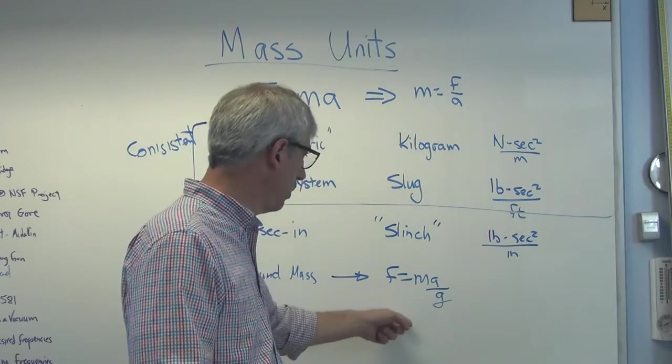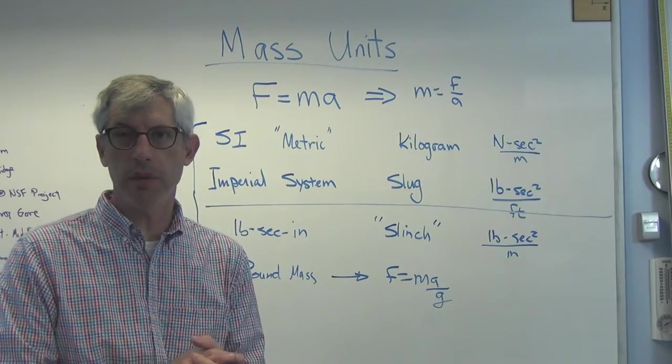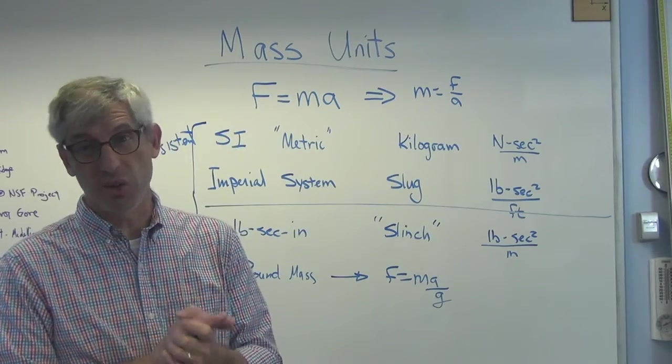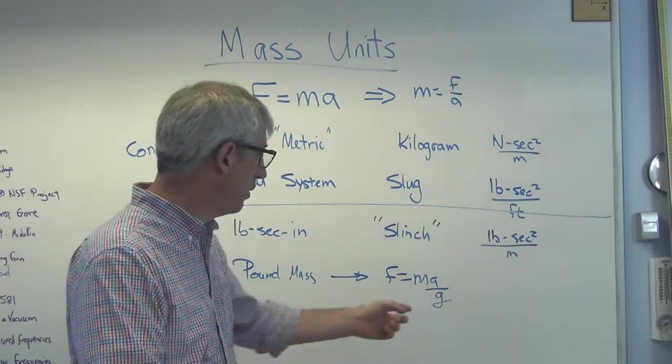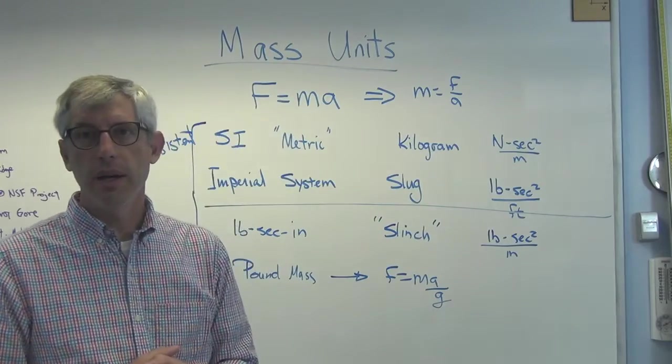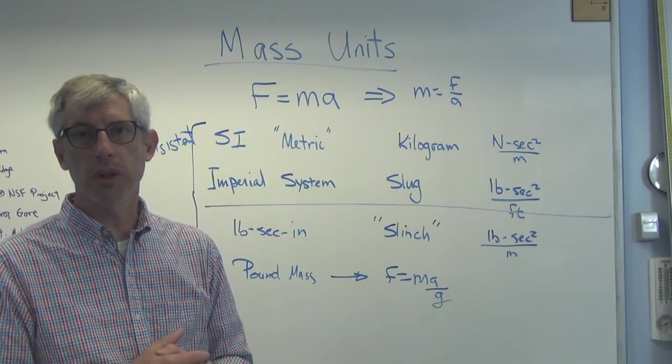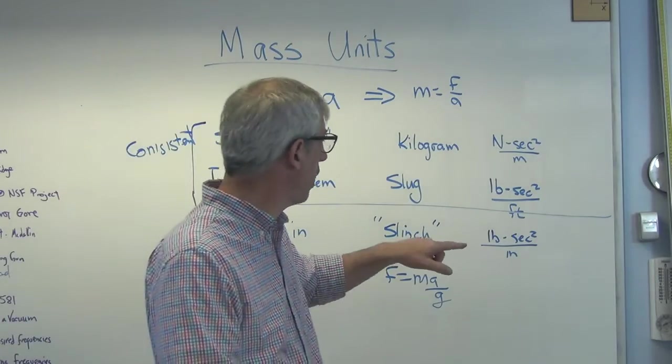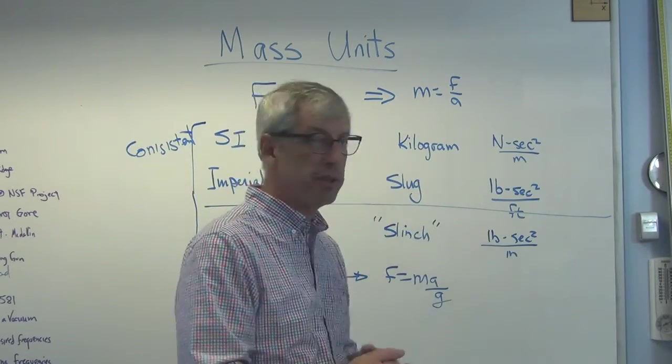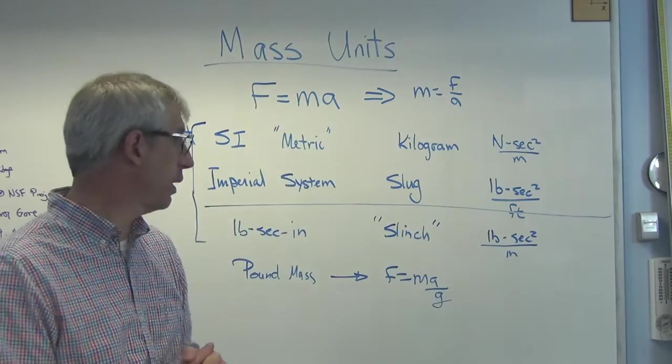Occasionally, I will see a student come in and try to use pound mass. And the reason they're coming to me is they tried to use pounds mass and couldn't get the right answer. And they're almost always off by a factor of 32.2 or something like that, because that's the acceleration of gravity in the imperial system is 32.2 feet per second squared.